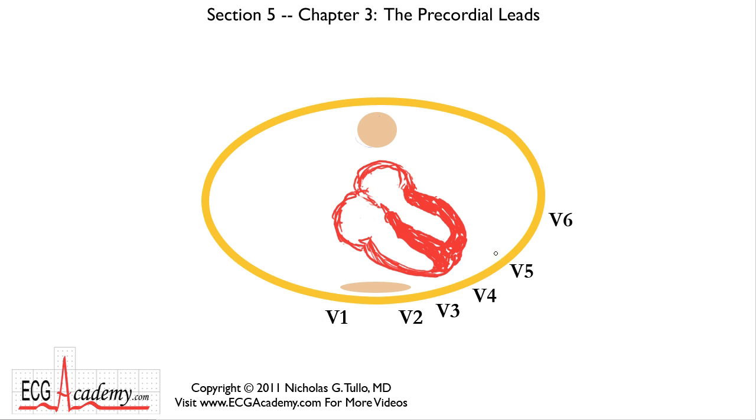V5 on the anterior axillary line, and V6 being in the mid-axilla, sort of like I've drawn it so that you're just cutting the chest in half, so that would be in the mid-axillary line. So that's where the V leads go.